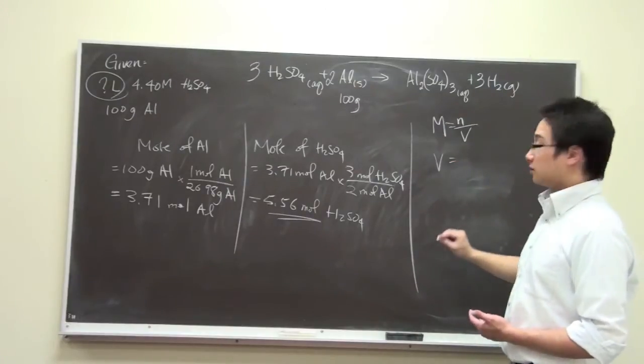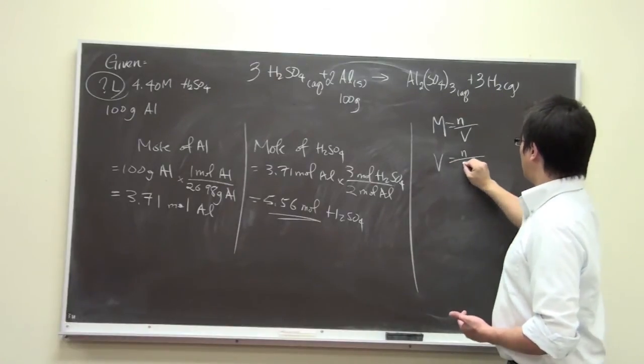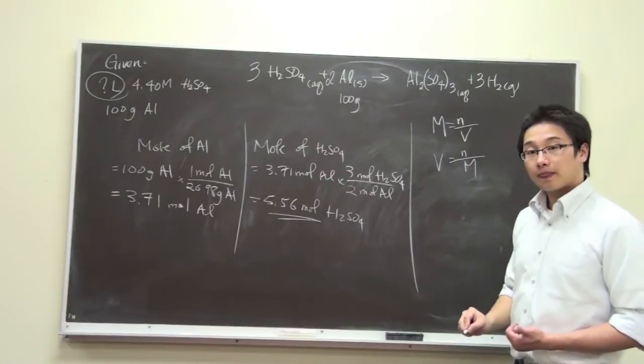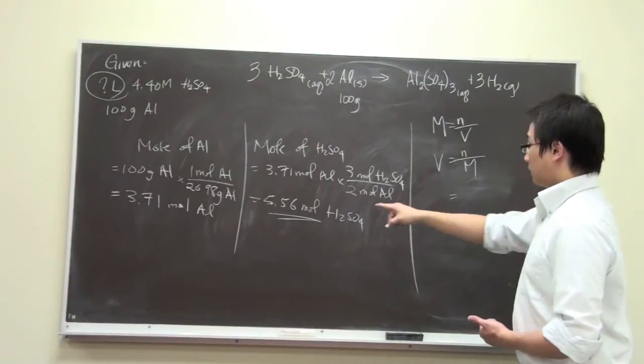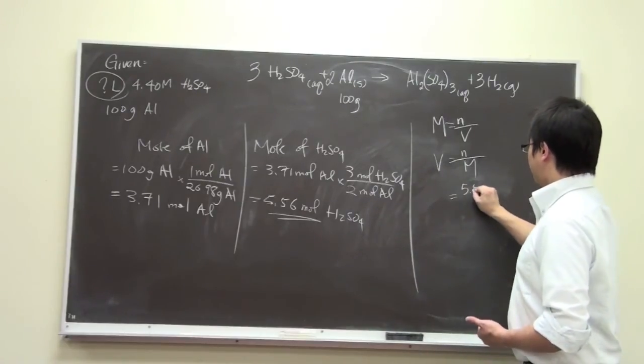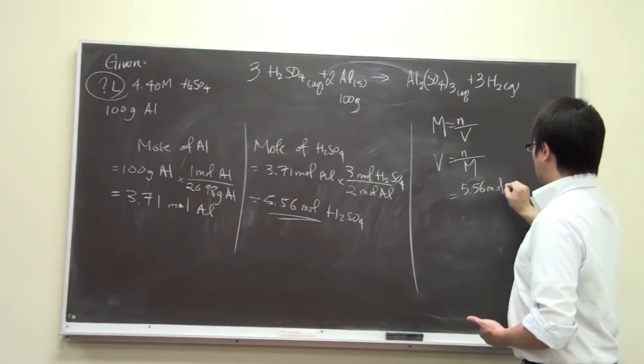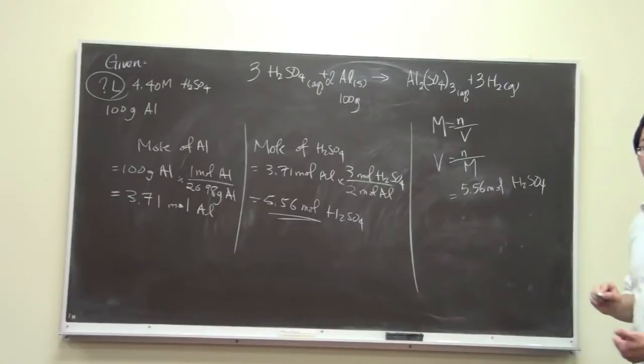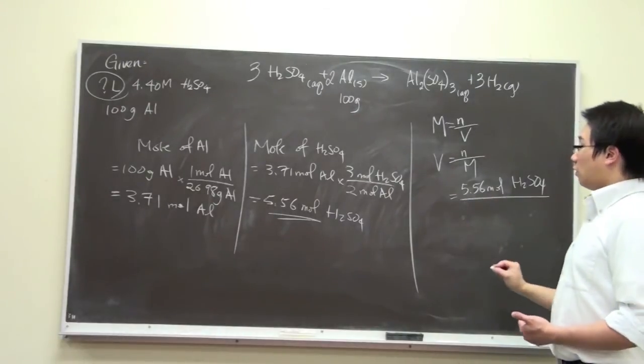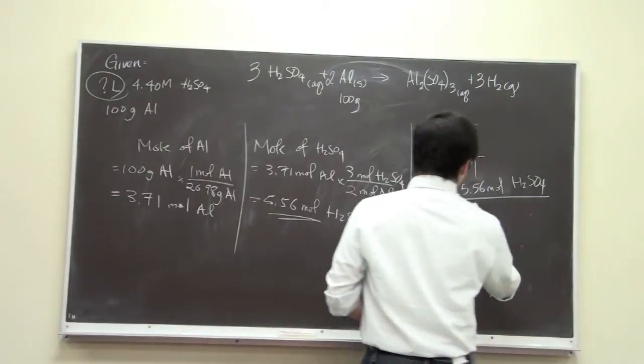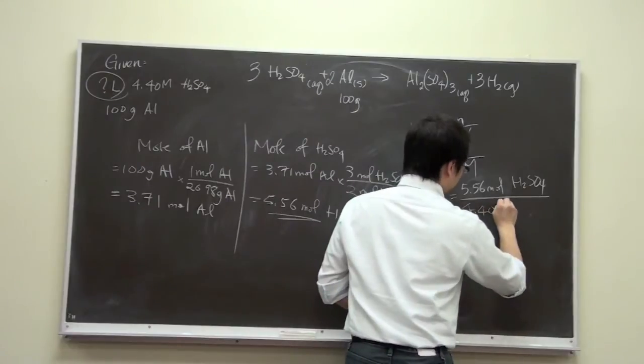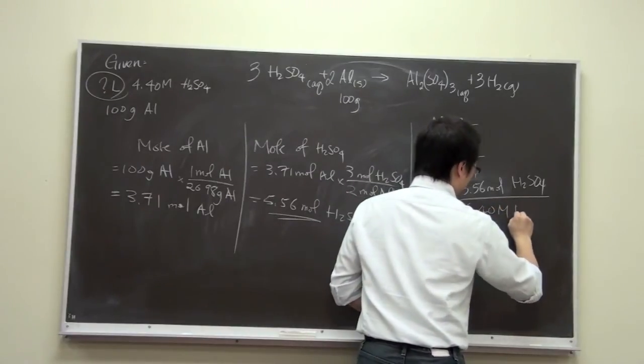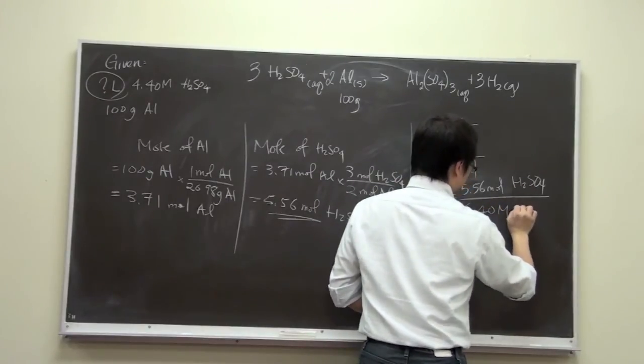Volume is equal to mole over the molarity. The number of moles we have here is 5.56 moles of sulfuric acid, and it is over 4.40 molar of this sulfuric acid.